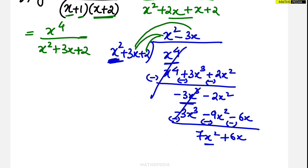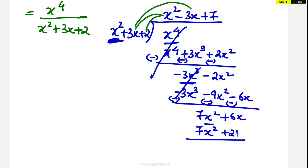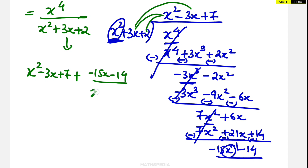The power is still x squared, so we continue. Multiply 7 by x squared to get 7x squared, then 7 times 3x gives 21x, and 7 times 2 gives 14. After subtraction: 7x squared cancels; 6x minus 21x is minus 15x, and minus 14 remains. The power is now reduced to x power 1, which is less than x squared, so the process is complete. The fraction is rewritten as quotient x squared minus 3x plus 7, plus remainder minus 15x minus 14, divided by x squared plus 3x plus 2.